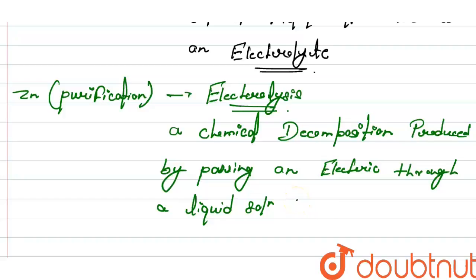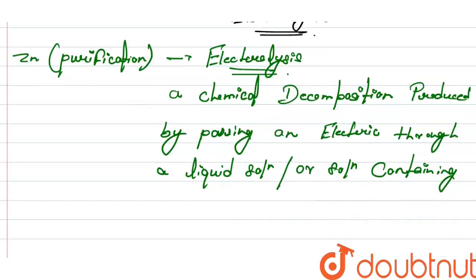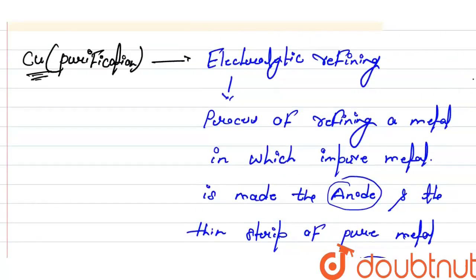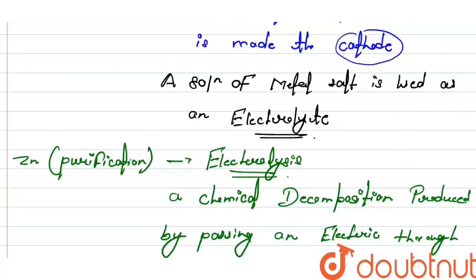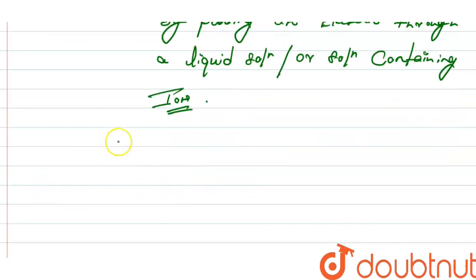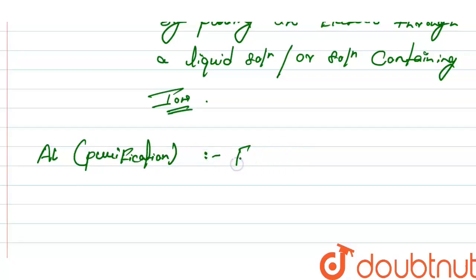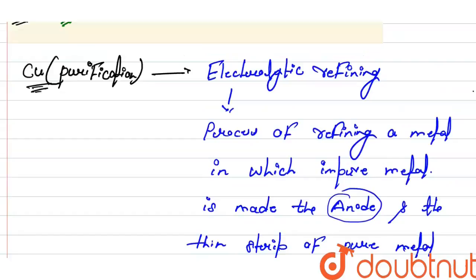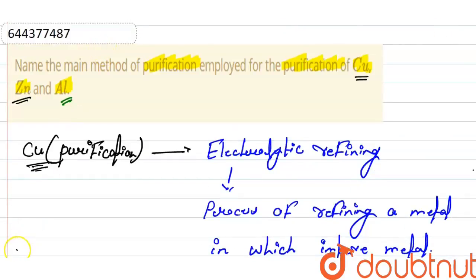The solution containing ions is used in this process. So for zinc, the purification method is electrolysis. Now for aluminium, the purification method is the same as zinc, so it also uses the electrolysis method.